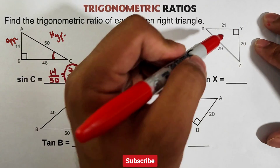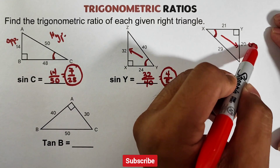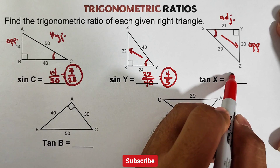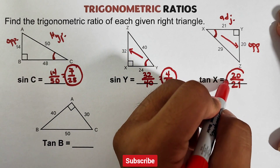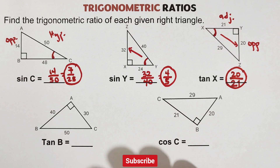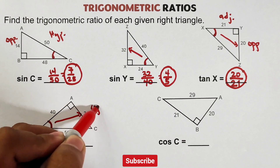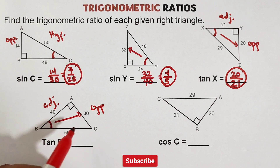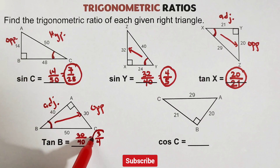Tangent X — this is your angle X. Remember, tangent is opposite over adjacent. This is your opposite and this is your adjacent, so that is 20 over 21. There's no lower term, so it stays as 20 over 21. Next, tangent B — the reference is angle B. The opposite side and adjacent side are identified, giving tangent B as 30 over 40. Simplify: that is 3 over 4. And that's it!